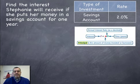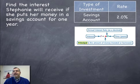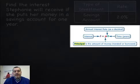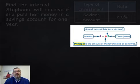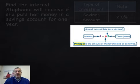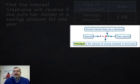To solve this kind of problem and find the simple interest, you're going to use a formula. The formula is I equals P times R times T. I equals the interest; P equals the principal, which is the amount of money invested or borrowed; R equals the interest rate, which is written as a decimal when you multiply; and T is the time, in years.